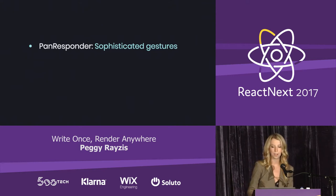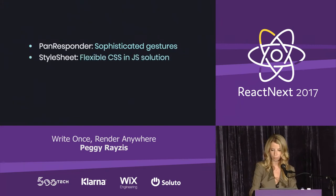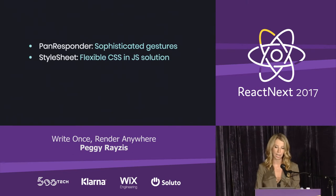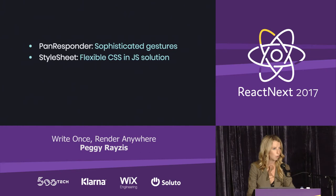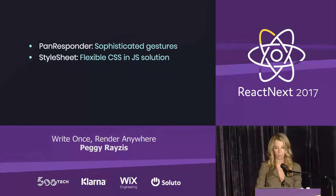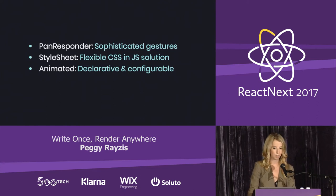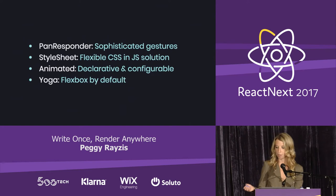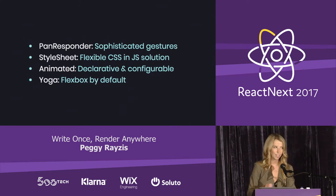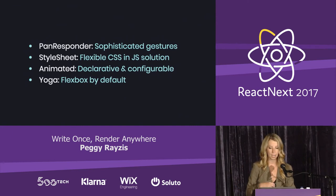With Pan Responder, you have an intuitive way to handle sophisticated multi-touch gestures. You have Style Sheet, a built-in CSS-in-JS solution that allows you to co-locate your styles with your React components and dynamically update them when props change. With the Animated API, it's easy to create performant declarative animations to enhance your UI. And you also have Yoga, which is Facebook's cross-platform layout engine. All you need to know is that it uses Flexbox by default for positioning your UI.